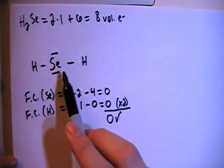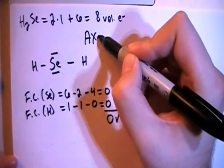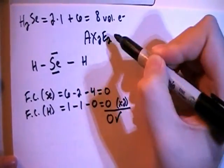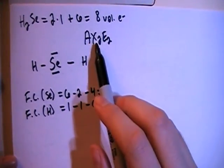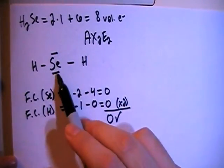with this type of structure, this is actually going to be called an AX2E2 type of structure, so central atom, two peripheral atoms, and two non-bonding pairs on the central atom.